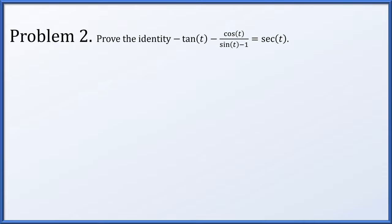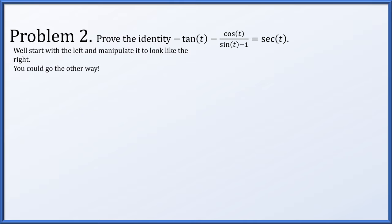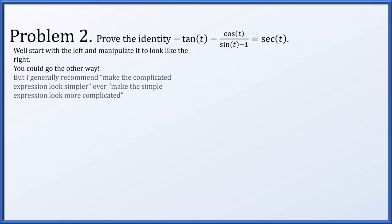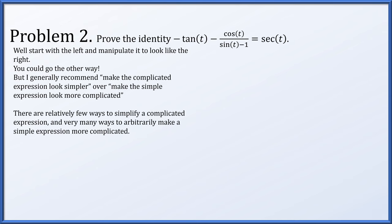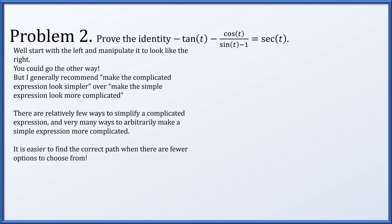In problem two, let's establish the identity negative tangent of t minus cosine of t over sine t minus 1, equal to secant of t. Again, we're going to start with the left and manipulate it to look like the right side. In this problem I really wouldn't recommend going the other way. Generally, find what is more complicated-looking and make it look simple. If you have a complicated expression, there are relatively few ways to simplify it, but if you have something simple, there are innumerable ways to arbitrarily make it more complicated.